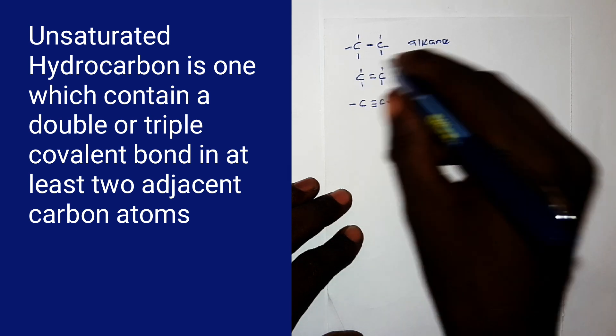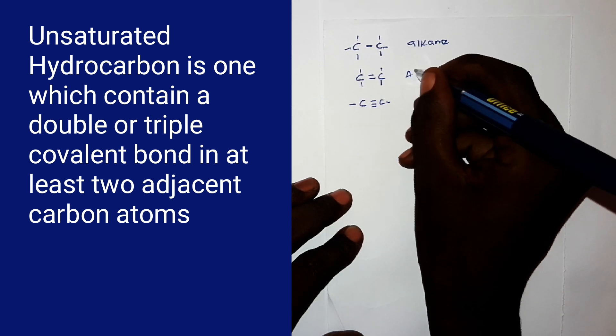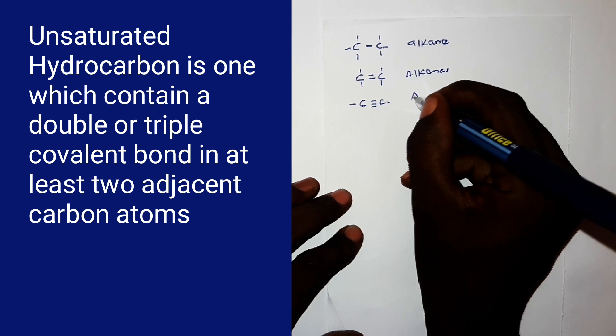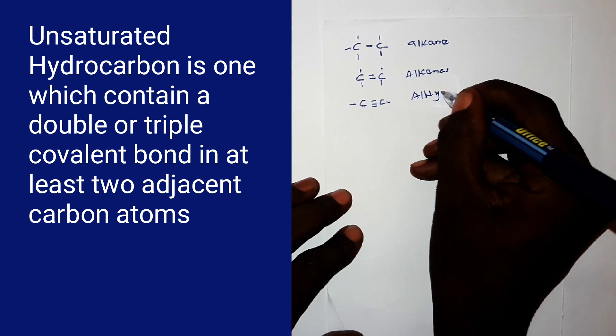Now, in this, the examples of unsaturated are alkenes. Alkenes and alkynes.